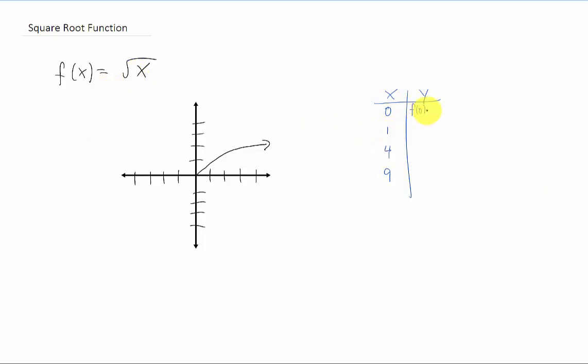So if we plug x equals 0 into our function, f(0) is the square root of 0, which is just 0. So we have a point (0, 0) that happens to be right there at the origin. If we plug in x equals 1, we get the square root of 1, which is just 1. So we have the point (1, 1).